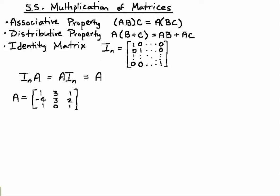You can also use the distributive property. You can add the matrices B plus C and then multiply the sum times A, or you can multiply A times B and A times C and add those two matrices together.